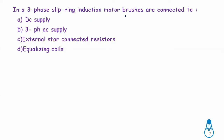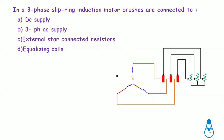In a three-phase slip ring induction motor, the brushes are connected to externally star-connected resistors. The brushes, shown in red, connect to slip rings shown in black, which connect to an external resistance. This is different from a squirrel cage motor which is completely short-circuited internally. The external resistance helps limit starting current and improve starting torque.